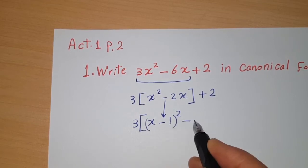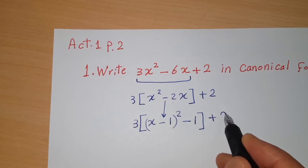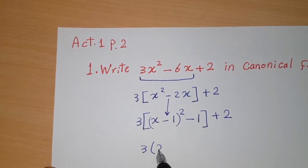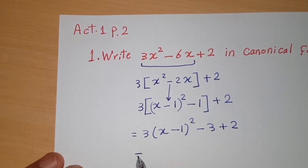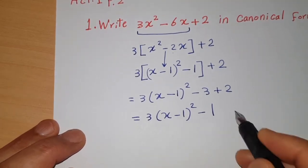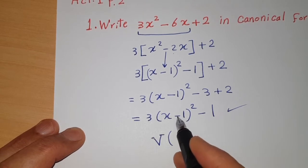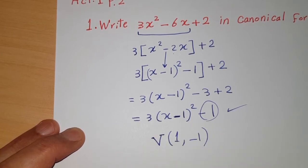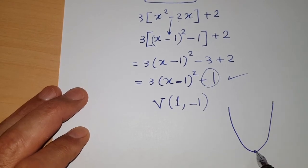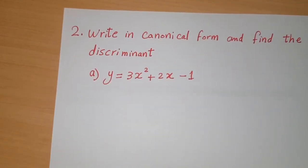Then subtract 1² which is 1 inside. If you expand, you get exactly x² - 2x. Multiply back: 3(x - 1)² - 3(1) + 2, which gives 3(x - 1)² - 1. This is the canonical form. The vertex is (1, -1) and the parabola opens upward.